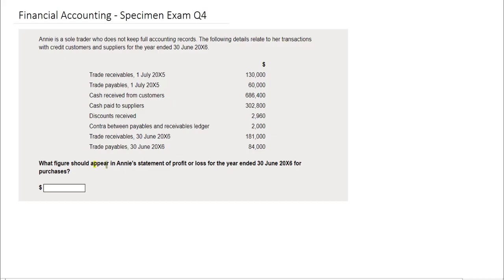In this question you are being asked to identify the figure that should appear in any statement of profit or loss for the year ended 30th of June 20X6 for purchases.